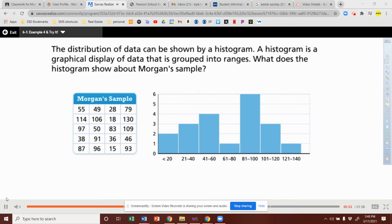The distribution of data can be shown by a histogram. A histogram is a graphical display of data that is grouped into ranges. What does the histogram show about Morgan's sample?